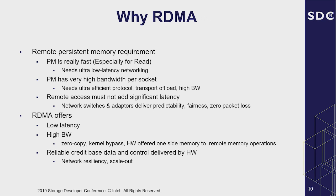Why do we use RDMA? Persistent memory is really fast, but if we use a traditional IP network stack, performance will be limited. So we want to use RDMA. RDMA is an acronym for Remote Direct Memory Access. It supports reading from and writing to memory of a remote server without CPU involvement on that server. It offers low latency and high bandwidth with zero-copy kernel bypass. Applications perform data transfer directly from user space with no context switch.